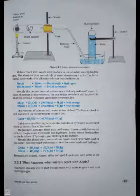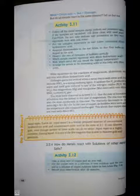3.2.3 What happens when metals react with acids? You have already learned that metals react with acids to give salt and hydrogen gas. Page number 44. Metal plus dilute acid equals salt plus hydrogen. But do all metals react in the same manner? Let us find out.